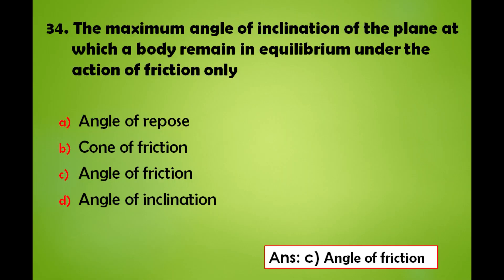The maximum angle of inclination of the plane at which a body remains in equilibrium under the action of friction only is called as: a) angle of repose, b) corner of friction, c) angle of friction, d) angle of inclination. The answer is: it is called as angle of friction.